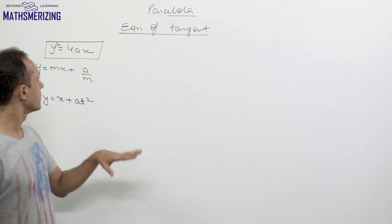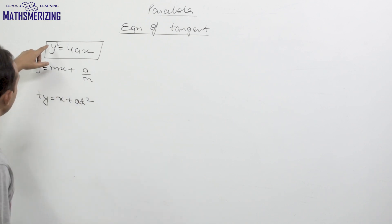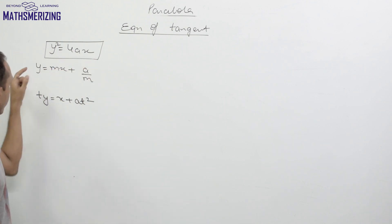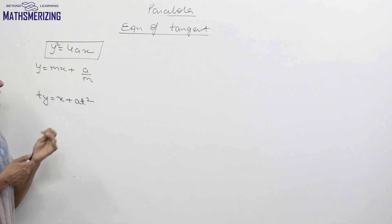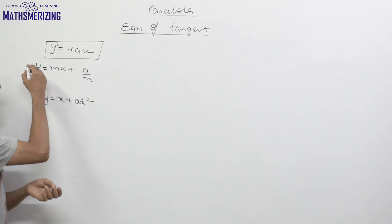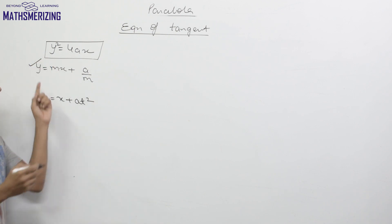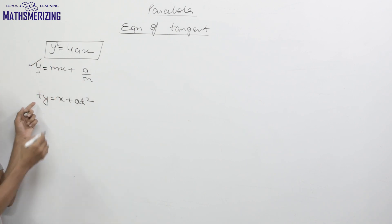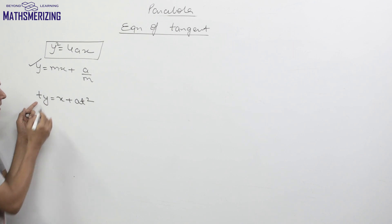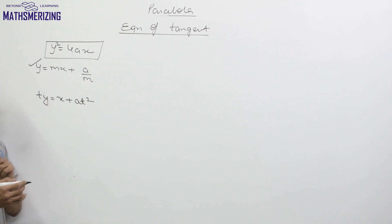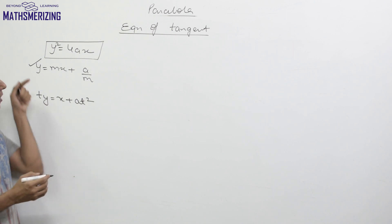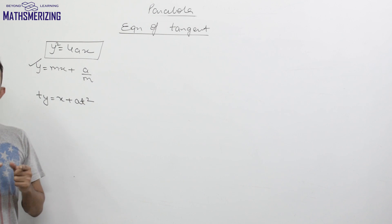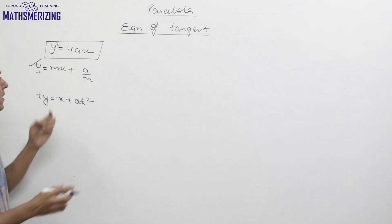In the previous video we discussed that for the parabola y² = 4ax, the equation of tangent can be written as either y = mx + a/m, or in parametric form as ty = x + at². Now we will discuss the equation of tangent for the other three forms.